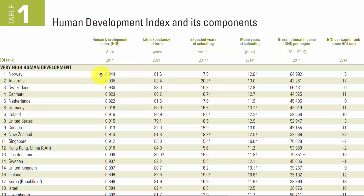The question is, how did they generate these index values like 0.944 or 0.935 from numbers like life expectancy 81.6? Whenever I don't know how to explain a number, the best method is: let's run a regression. The purpose of the statistical technique called regression is exactly that — to tell us, if I have some explanatory variables, what function can explain an outcome variable, a dependent variable.